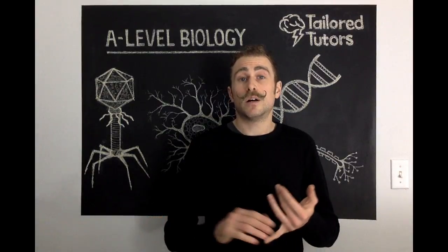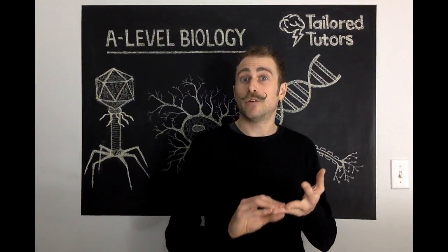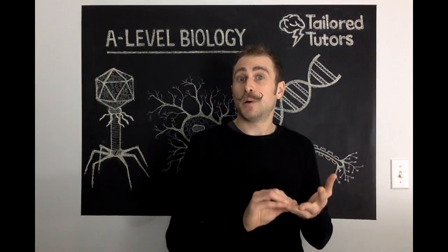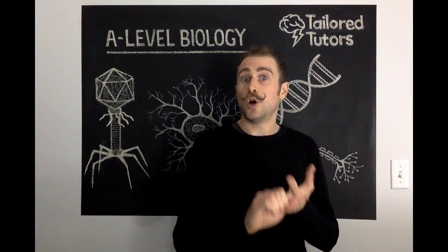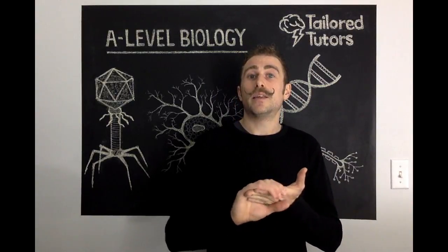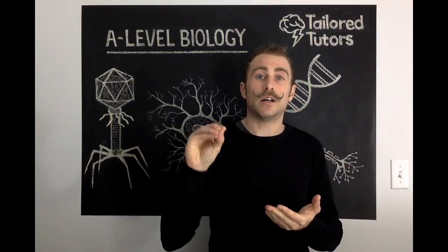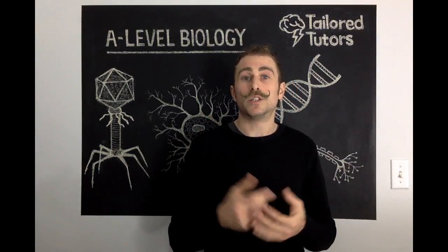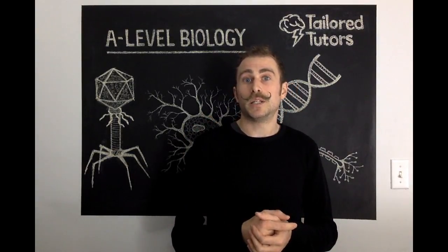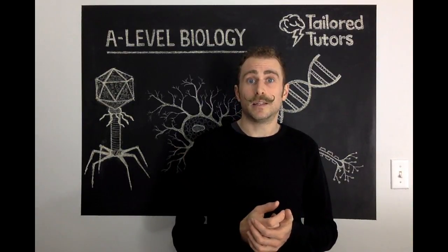Waterlogged soils can be anaerobic, therefore denitrifying bacteria are going to respire anaerobically, therefore there's low nitrogen in the soil, and therefore the plants are getting their nitrogen by being carnivorous — by consuming or dissolving the proteins in the flies or insects that they're eating.